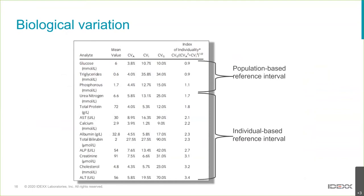A study done at Oregon State University by Australian Craig Ruer looked at a group of healthy dogs sampled over three months, using something called the Index of Individuality to determine what was best evaluated by a population-based reference interval versus individual comparison. Glucose, triglycerides, and phosphate were reasonable to assess with a population-based reference interval, but all other analytes in a standard biochemical profile were better evaluated — or at least gave an extra layer of information — when compared to previous results in health.